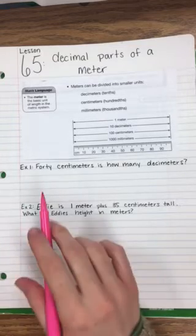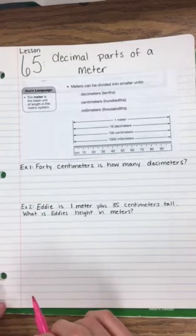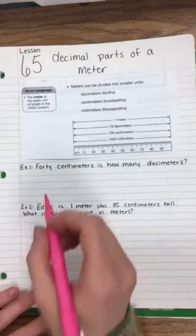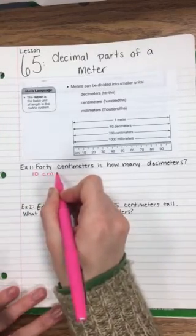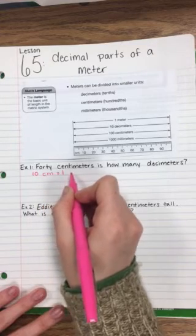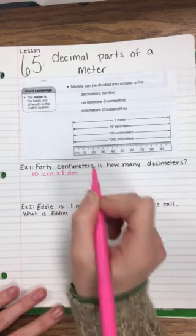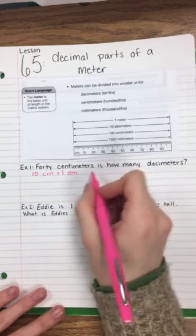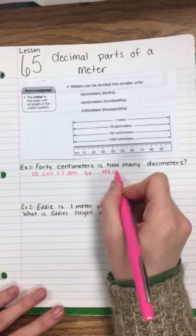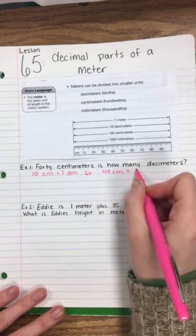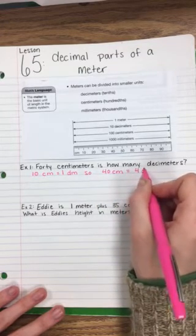Example 1: 40 centimeters is how many decimeters? Well, we know 10 centimeters equals one decimeter, so 40 centimeters equals four decimeters.